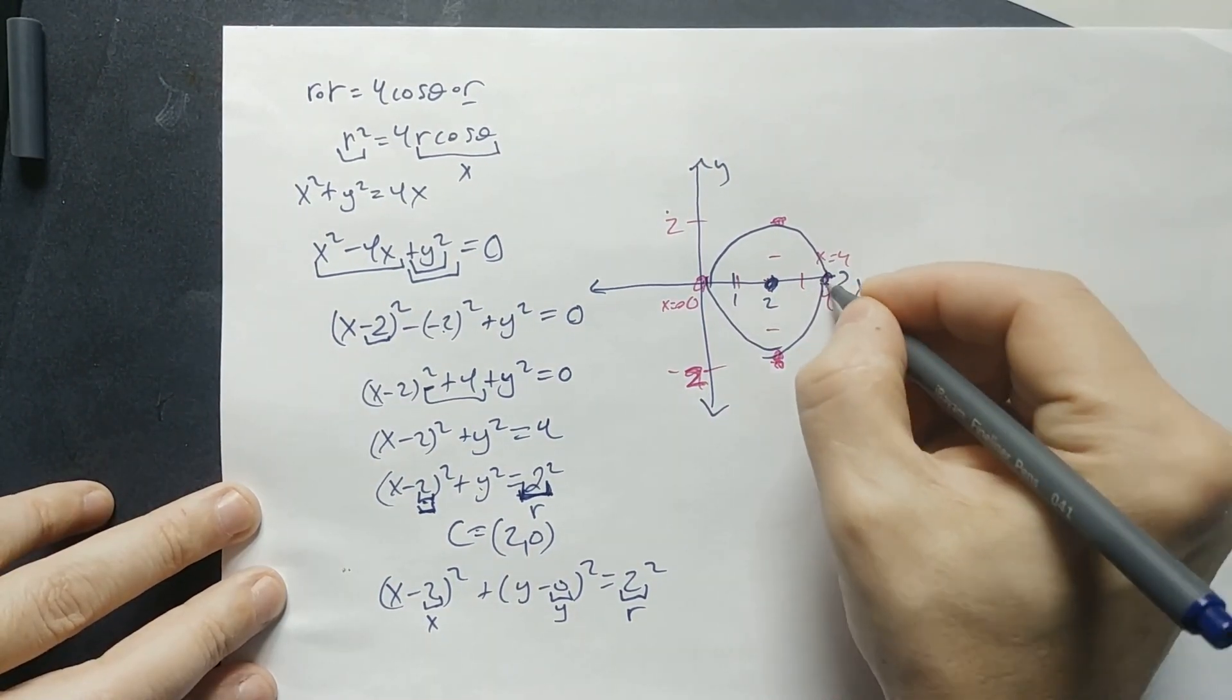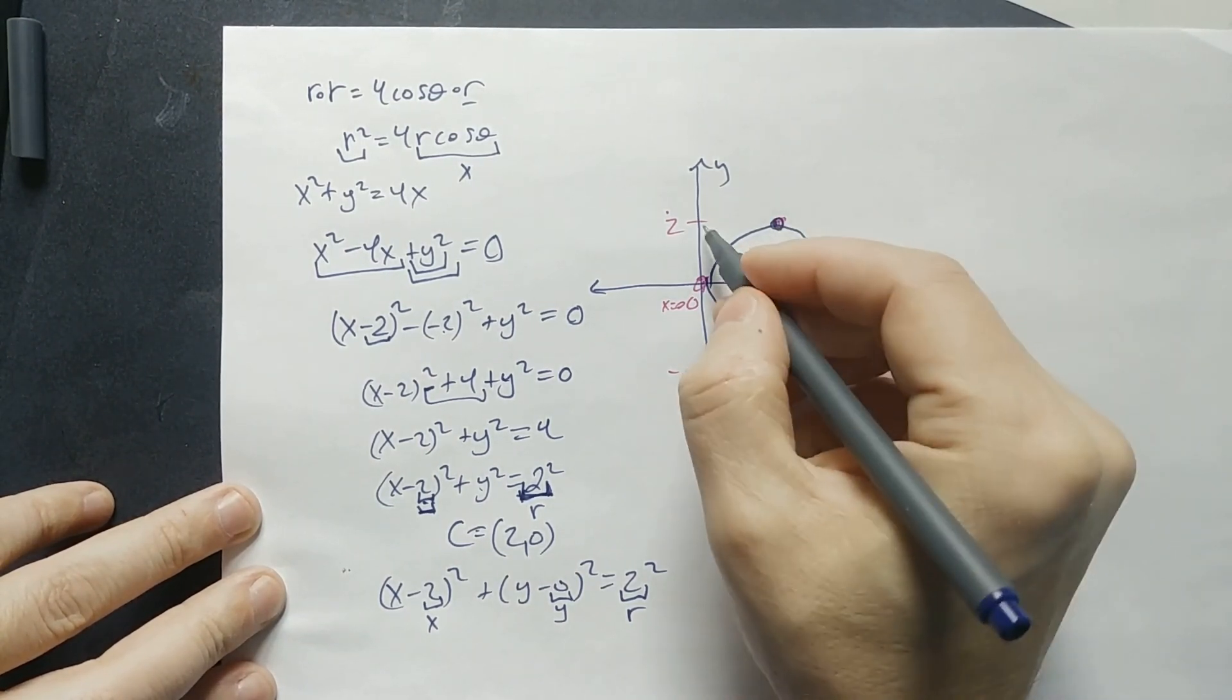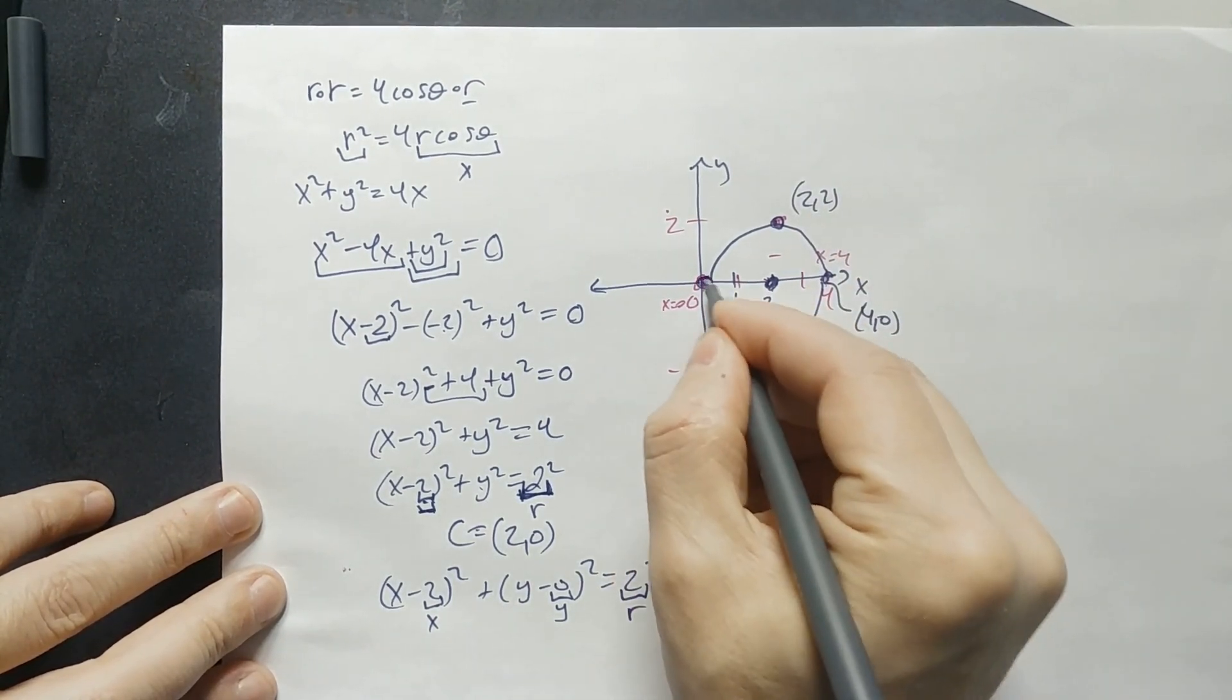And sometimes you're asked to label points. Like that would be the point 4, 0. This is 2 units above the x-axis. So it's going to be the point, in other words, 2, 2.